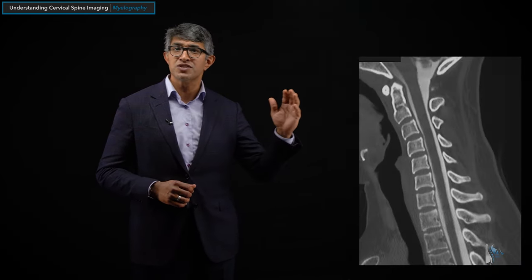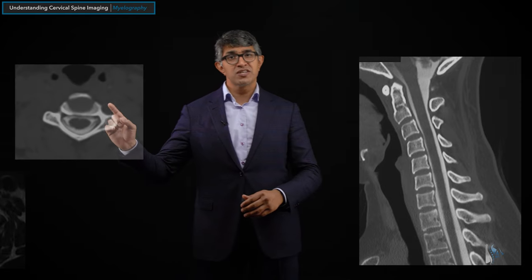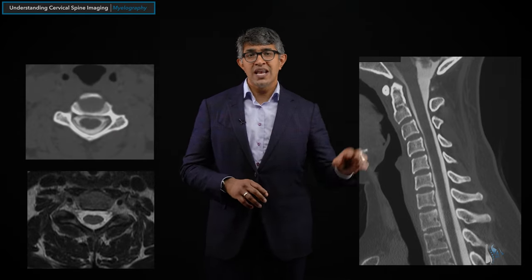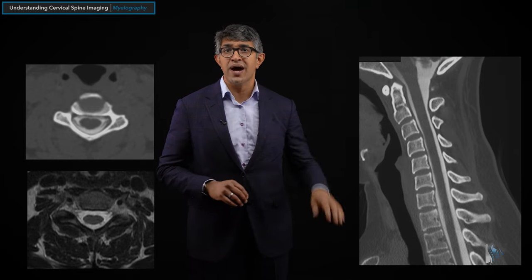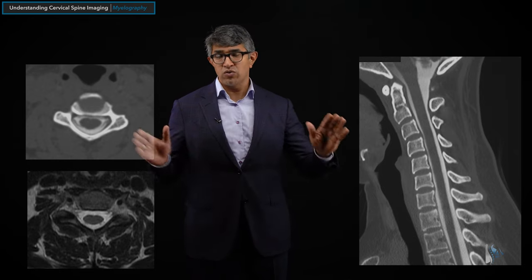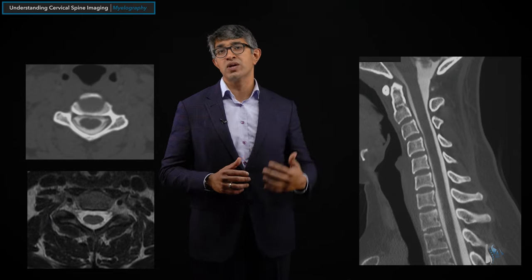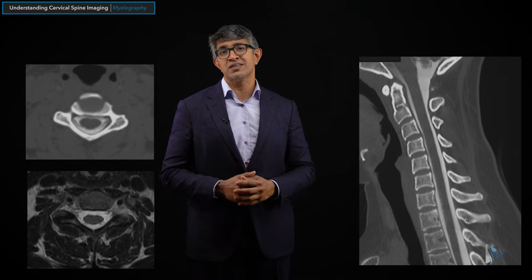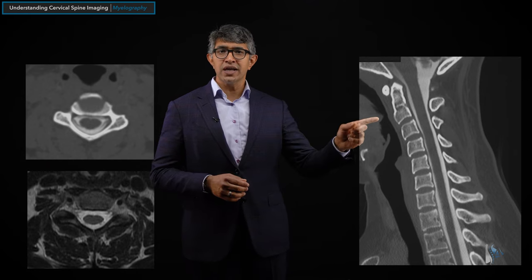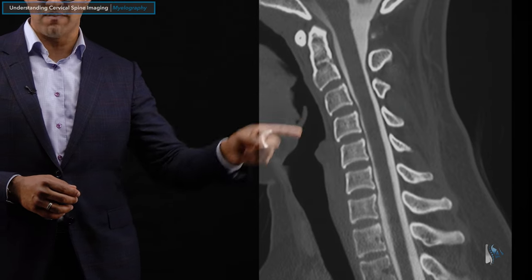A CT myelogram will give you pictures that look like this. You'll get an image that's not only a sagittal sequence but also potentially an axial sequence. When I get a myelogram on a patient, once they get the spinal tap and the fluid is in there, I usually get the whole thing — cervical, thoracic, and lumbar — because once it's in there, you may as well get imaging through the whole spine, just to spare people from having to get that spinal tap repeatedly.